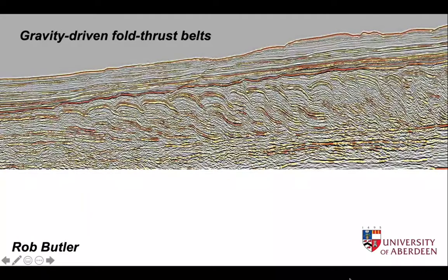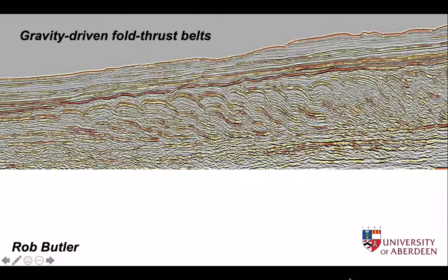Traditionally, understanding of thrust belts has come from outcrop examples found on the margins of mountain belts, formed by collision tectonics, but that's by no means the only place where fold thrust belts are found. Some really spectacular examples, such as the one on the screen at the moment, have nothing to do with orogenic processes.